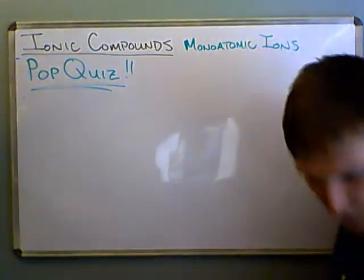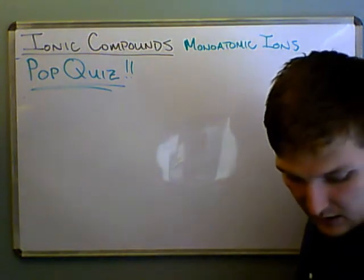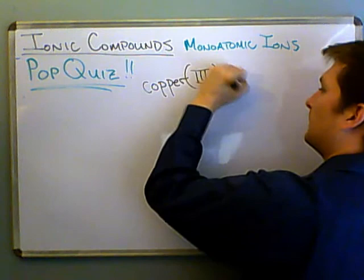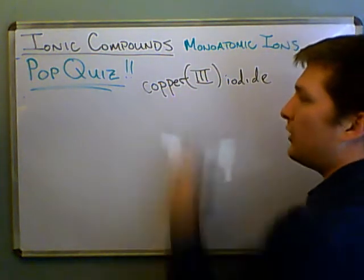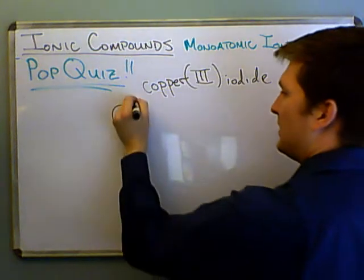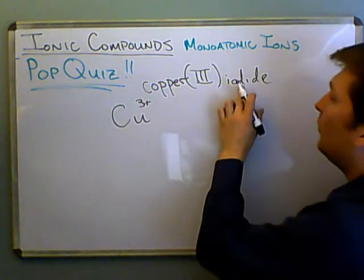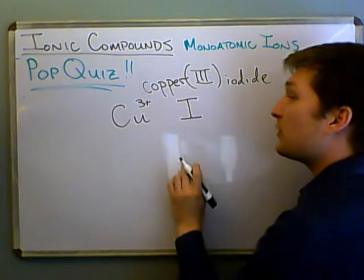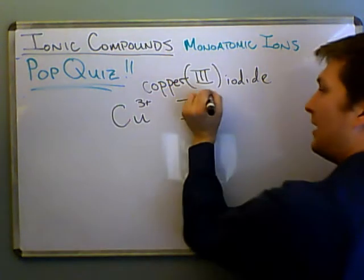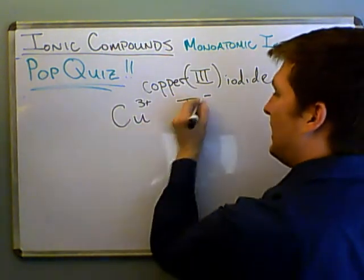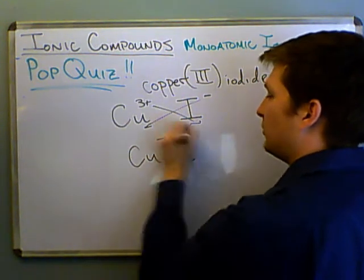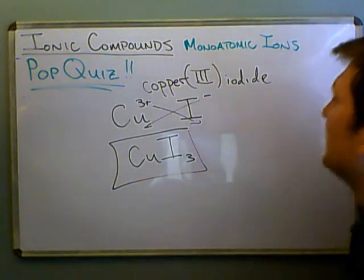Number four was copper(III) iodide. We already know what the ions are: copper Cu with a charge of three plus as specified, and the iodide ion. Iodide is one of the predictable ones — it's a halogen, it always likes to gain one electron, making it one minus. If we do the cross thing, we end up with CuI₃. That's the formula for copper(III) iodide.